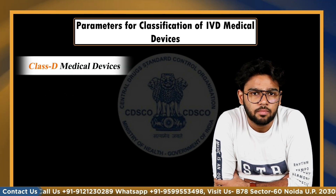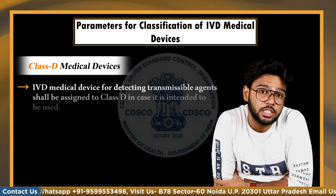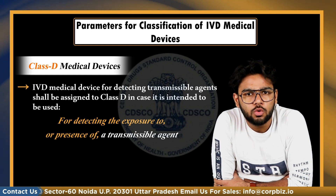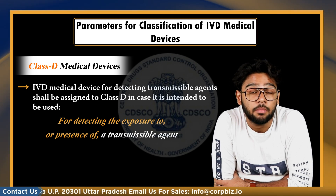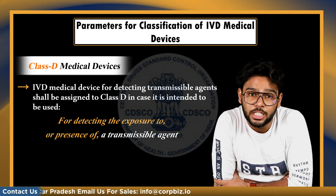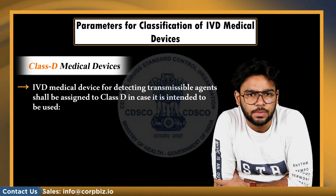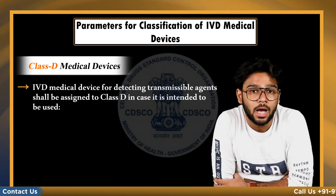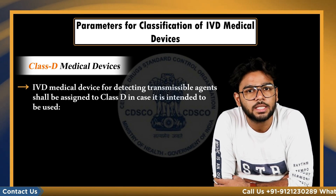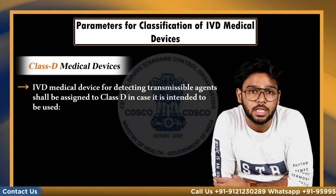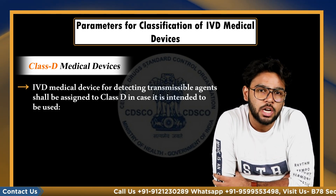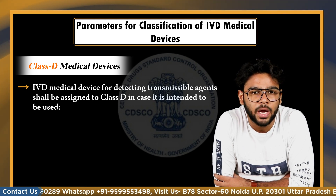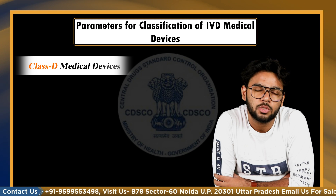Next is Class D. IVD medical devices for detecting transmissible agents shall be assigned to Class D in case it is intended to be used for detecting the exposure to or presence of transmissible agents in any blood, blood components, cells, tissues, blood derivatives or organs for transplantation or transfusion, or causes a life-threatening disease with a high risk of propagation. The CDSCO's new classification system is a step forward towards commercialization and registration of IVD, as the Indian market of IVD is expected to cross a billion dollars very soon.